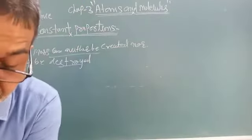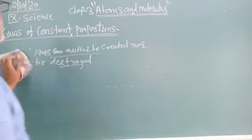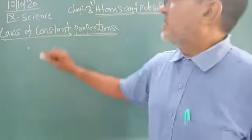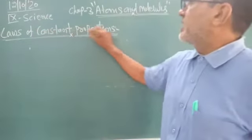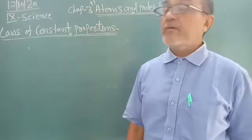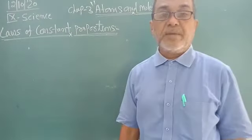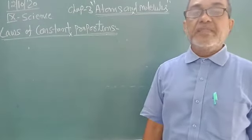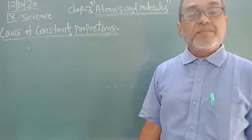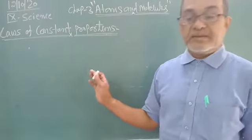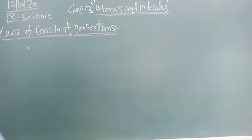Today we will discuss the law of constant proportions. When two atoms combine with each other, they form compounds. Every compound contains two or more types of atoms.